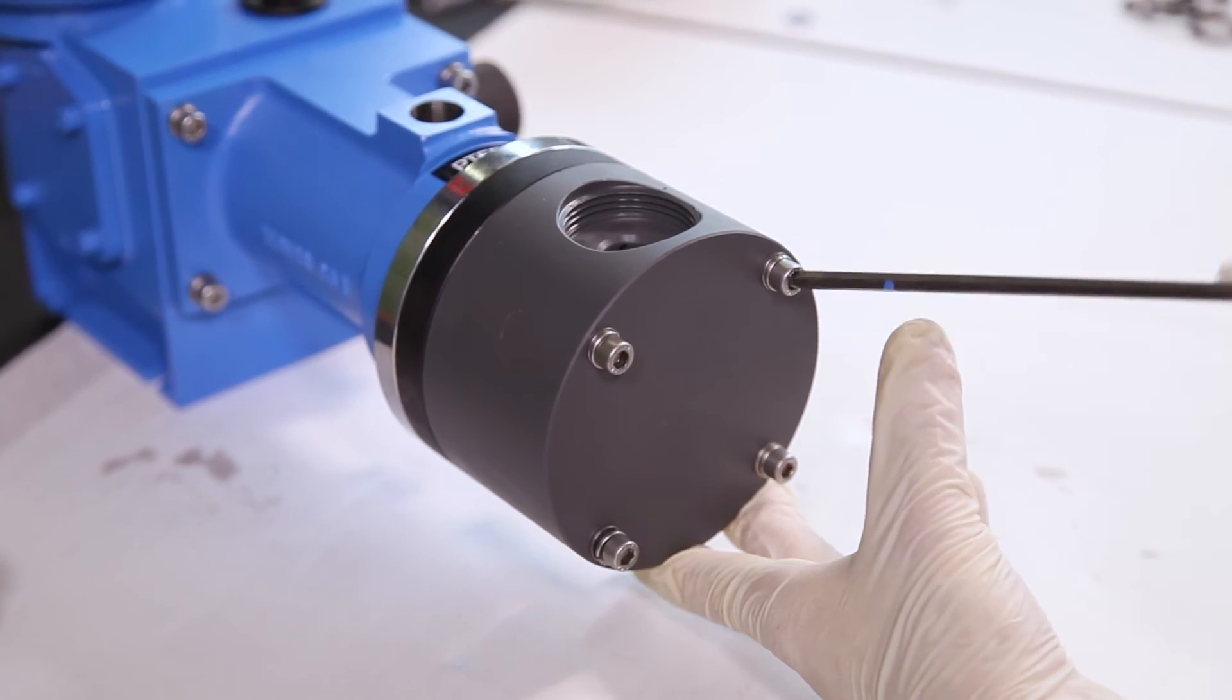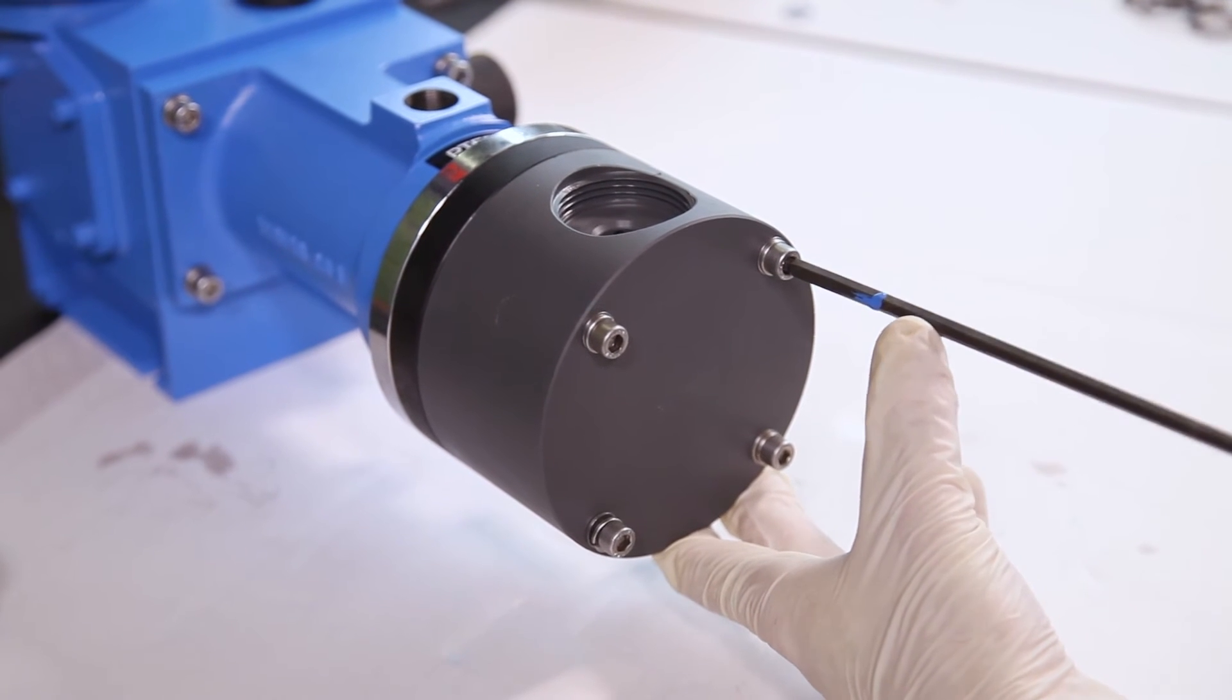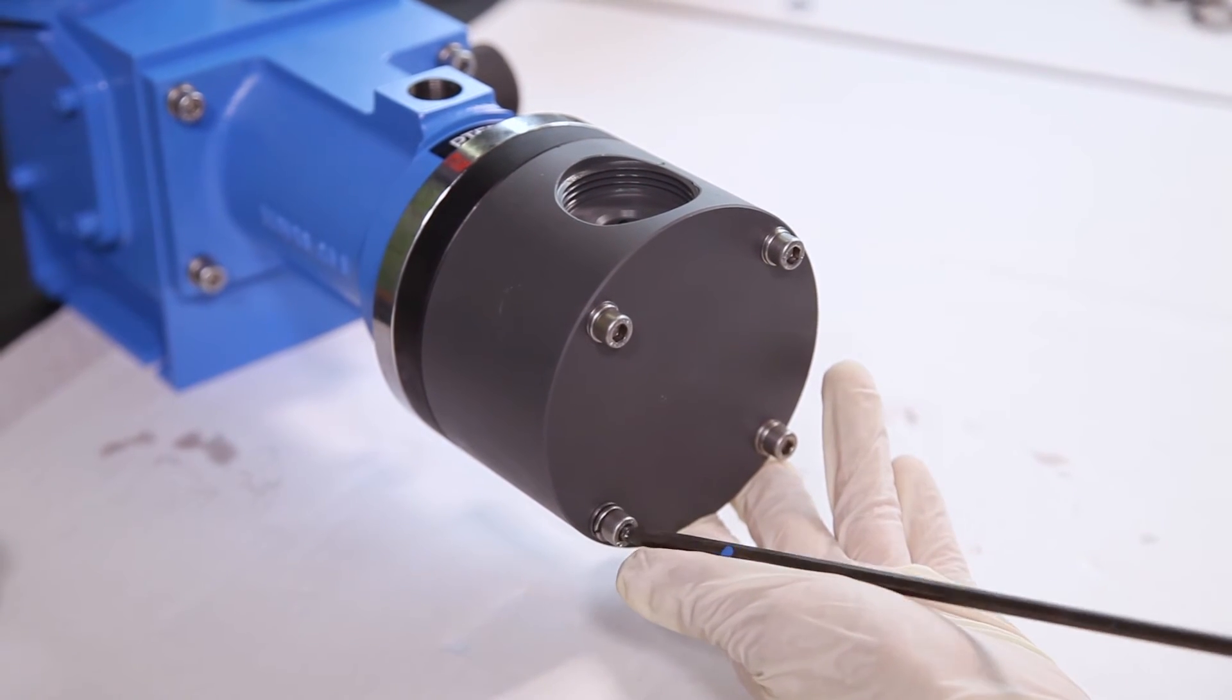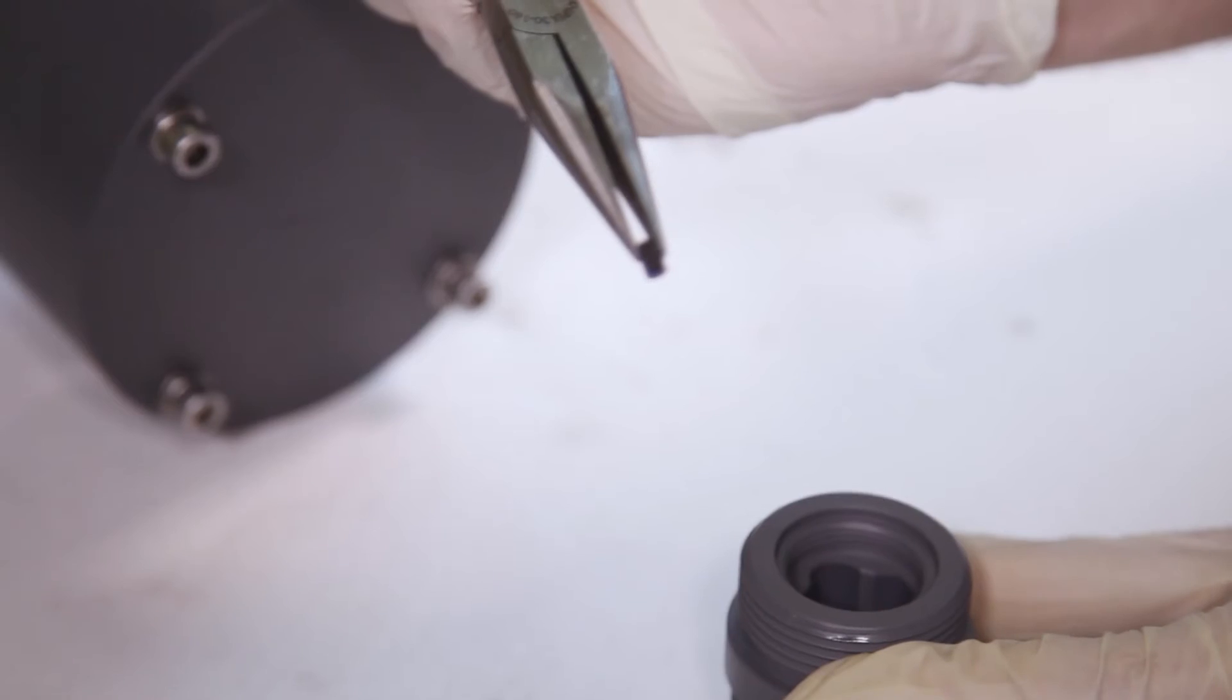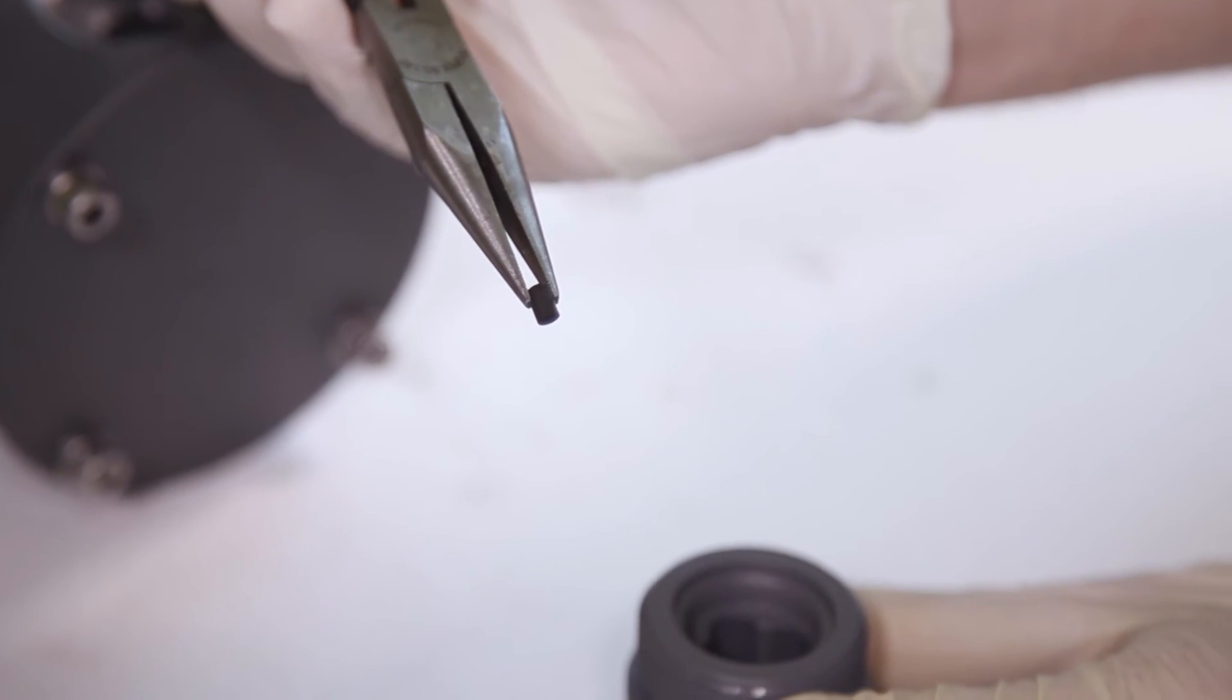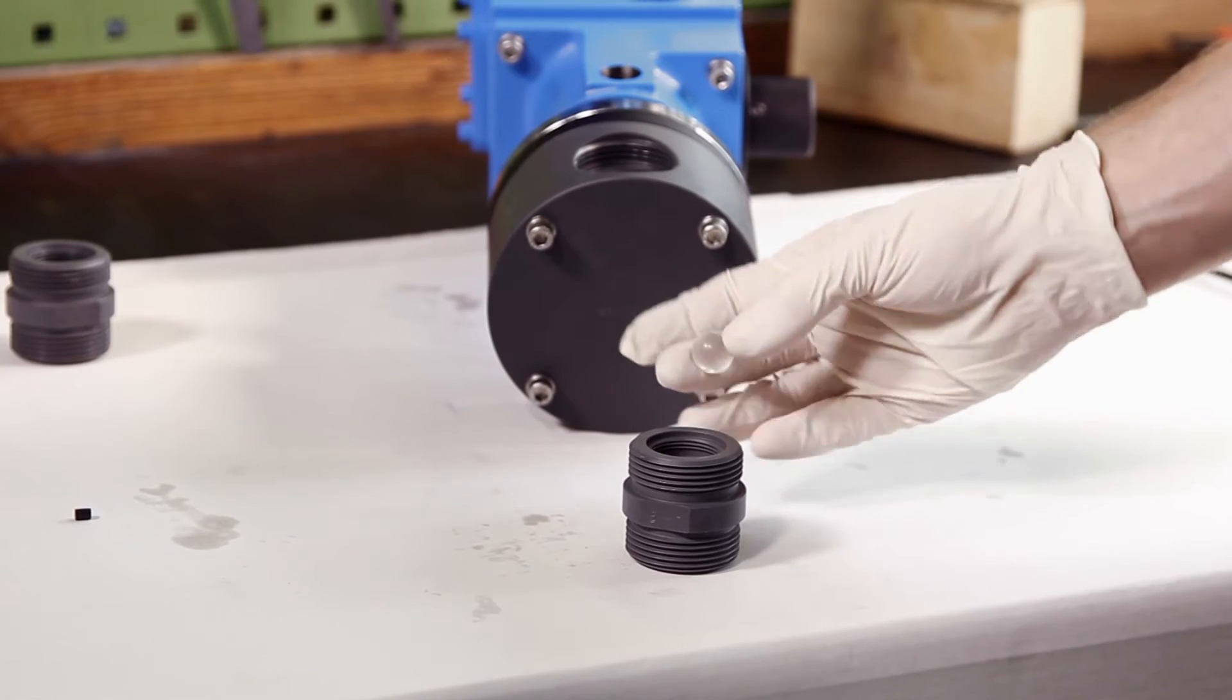If the screws are over tightened, plastic dosing heads are likely to be damaged. The old valve bodies are provided with a new stop, a new ball and a new seat.